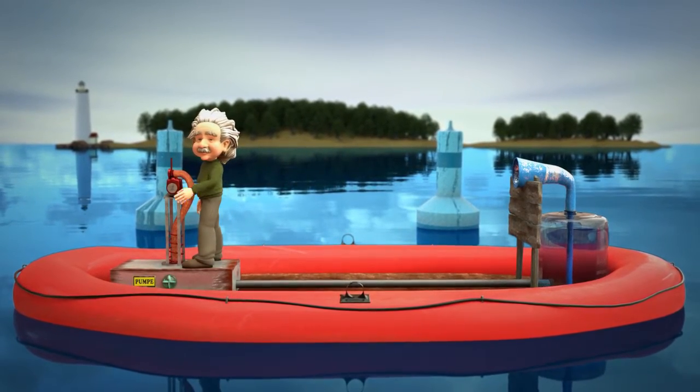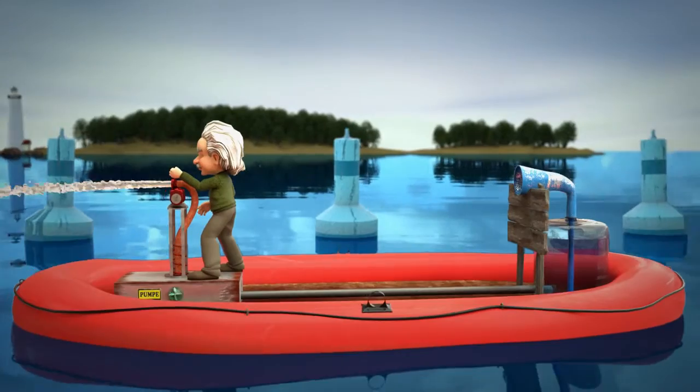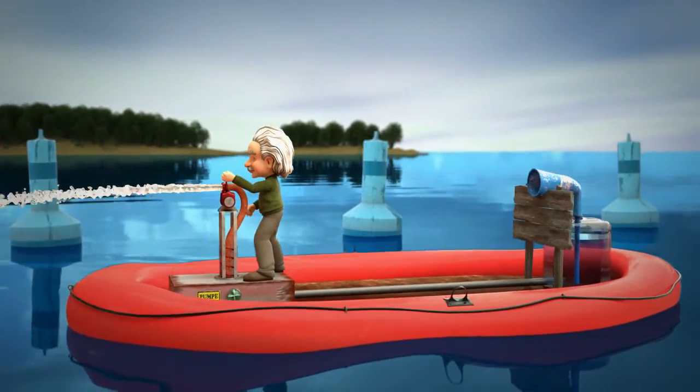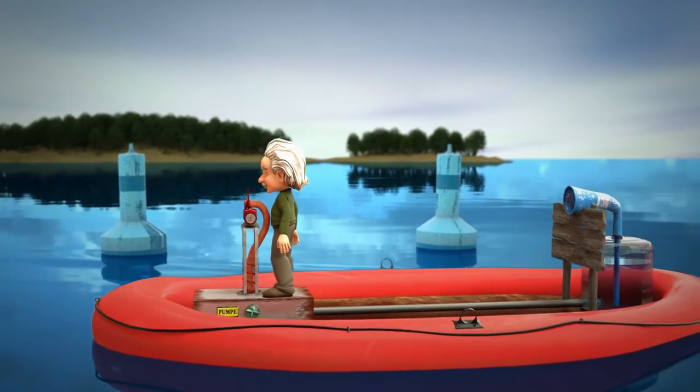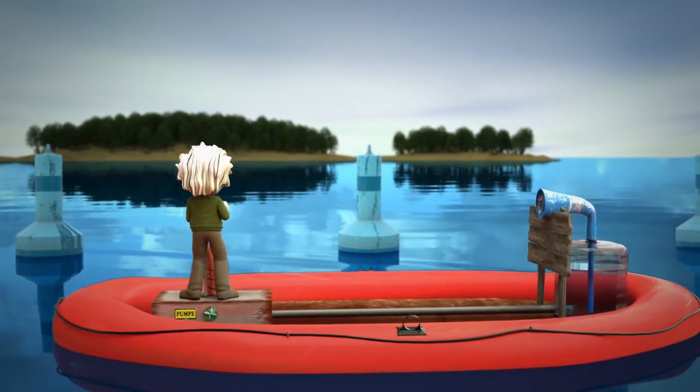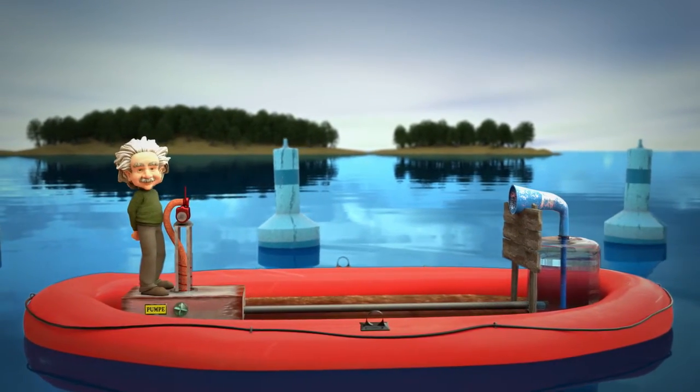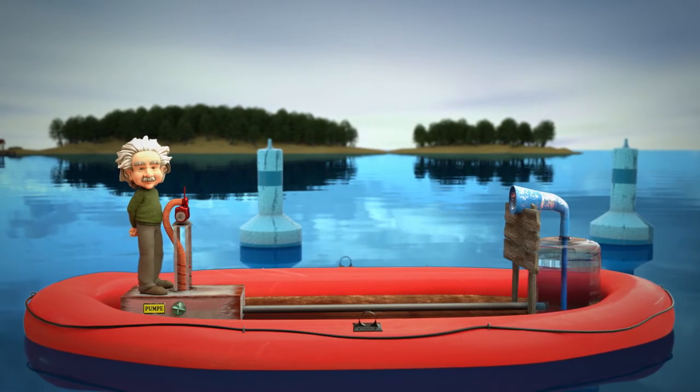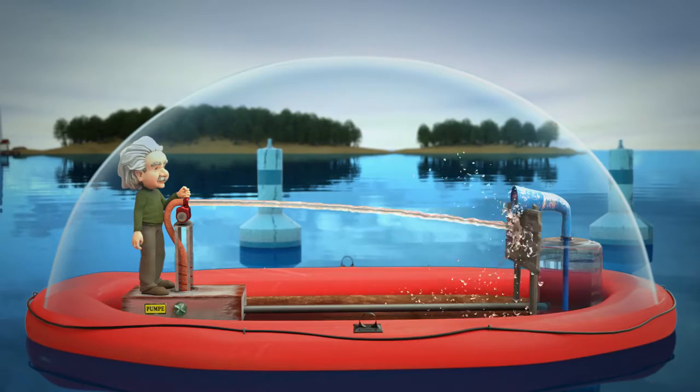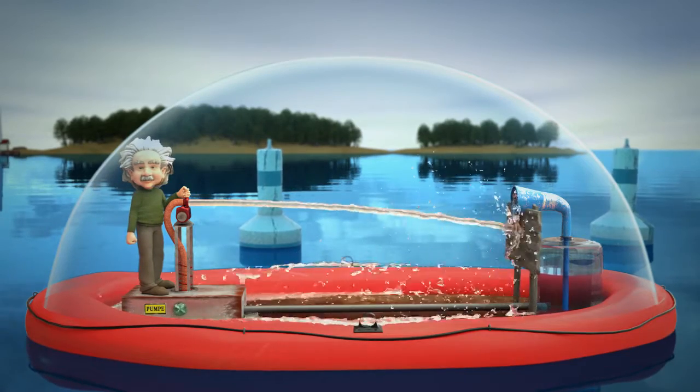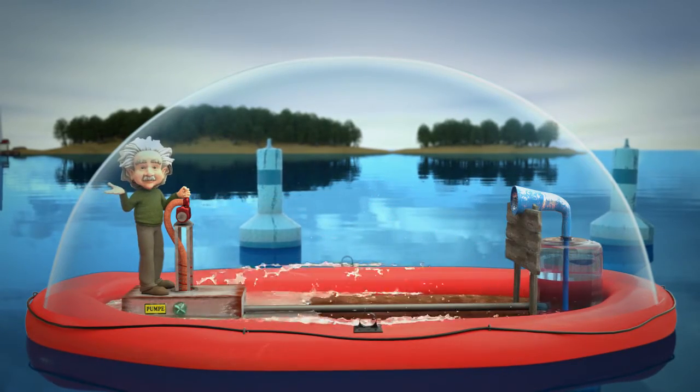A hose ejects water into the ocean. The hose is connected to a pump and a water reservoir. The water reservoir is not connected to the ocean. The arising forces cause the boat to move. However, when a dome is mounted on the top of the boat, creating a closed system, the jet of water cannot escape the boat. Consequently, the boat will not move.